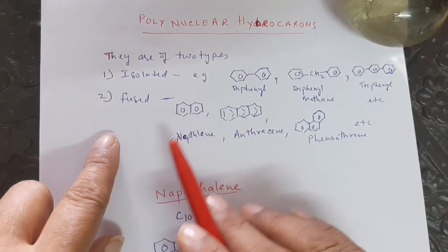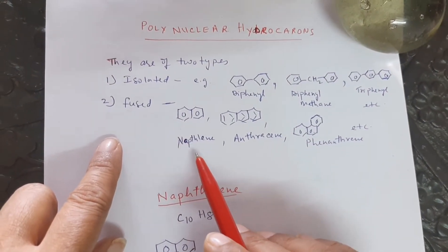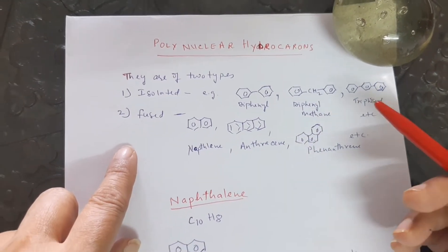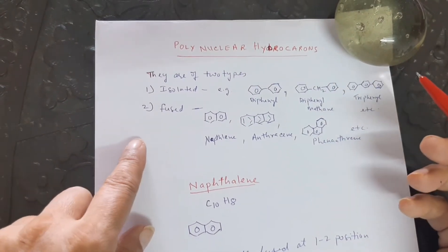And in the fused polynuclear hydrocarbons, the examples are naphthalene, anthracene, phenanthrene, tetracene, pentacene, etc.